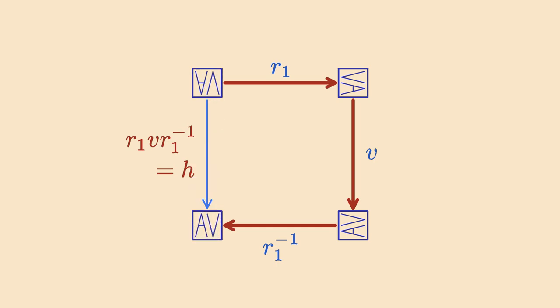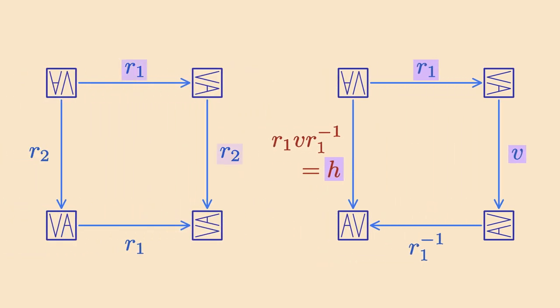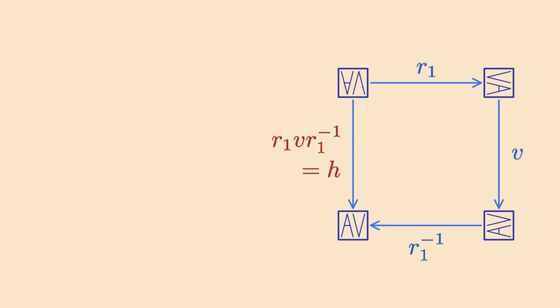So by putting h here on the left, the diagram commutes again. Please note that our group is still not commutative. The only thing we have fixed is this one little diagram. And the diagram involves three different symmetries now. If we want to swap the order of the rotation and the vertical flip, we have to replace the vertical flip with a horizontal one. This is very different from the first diagram, where we only had two symmetries, and we could simply swap their order.